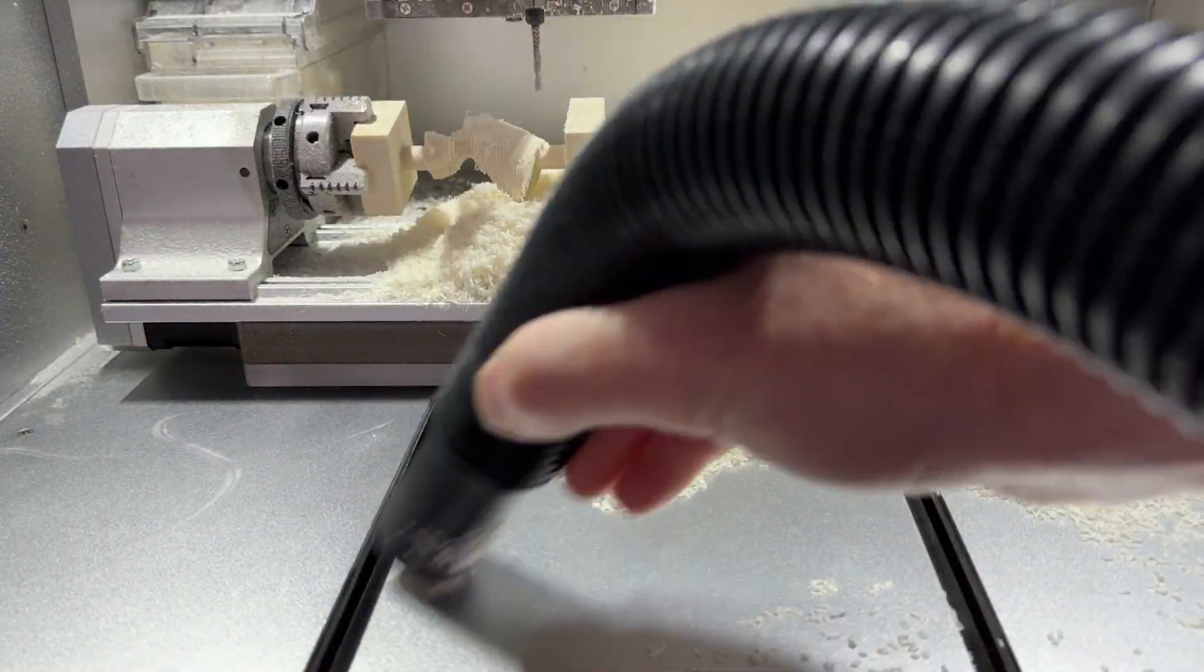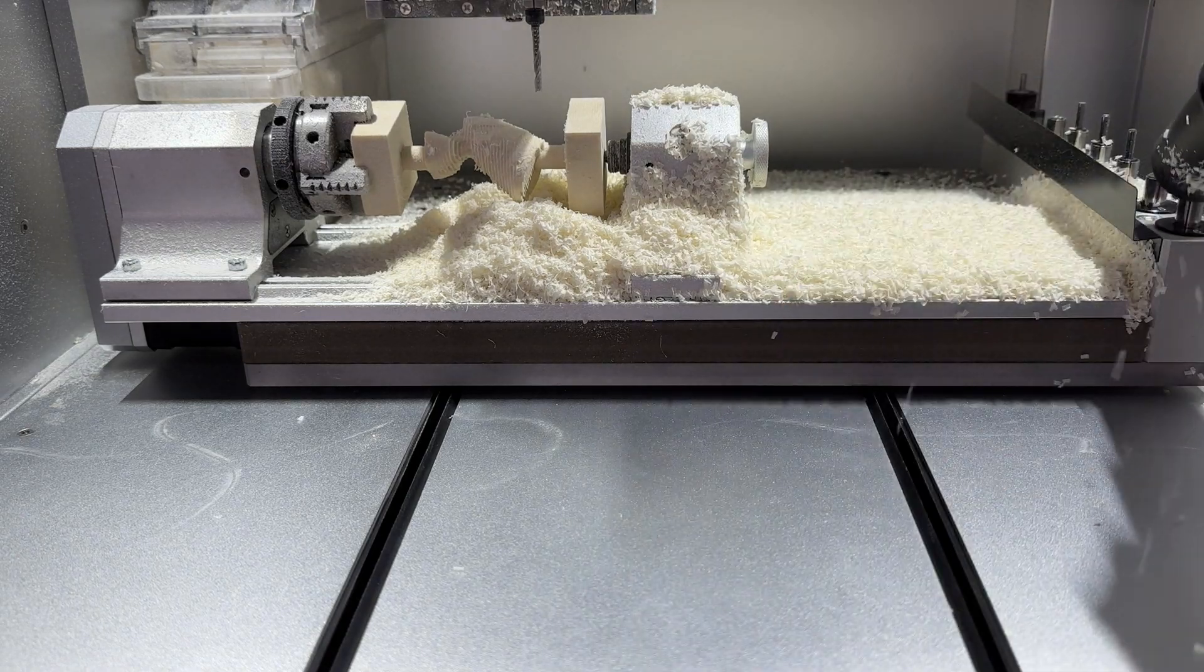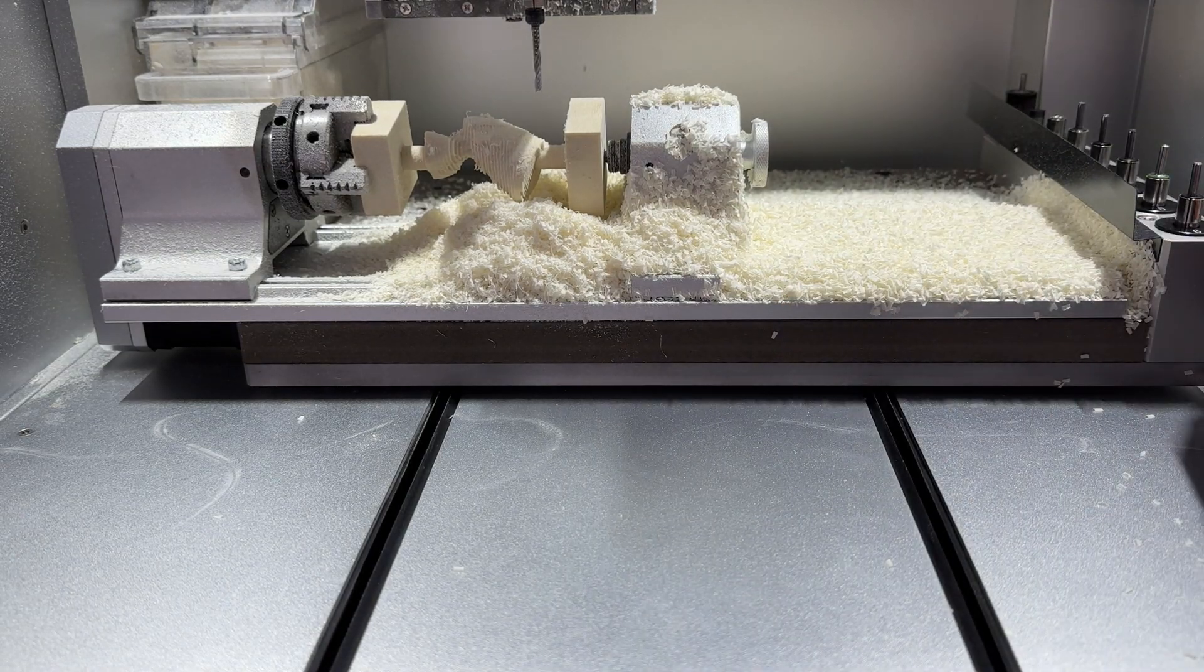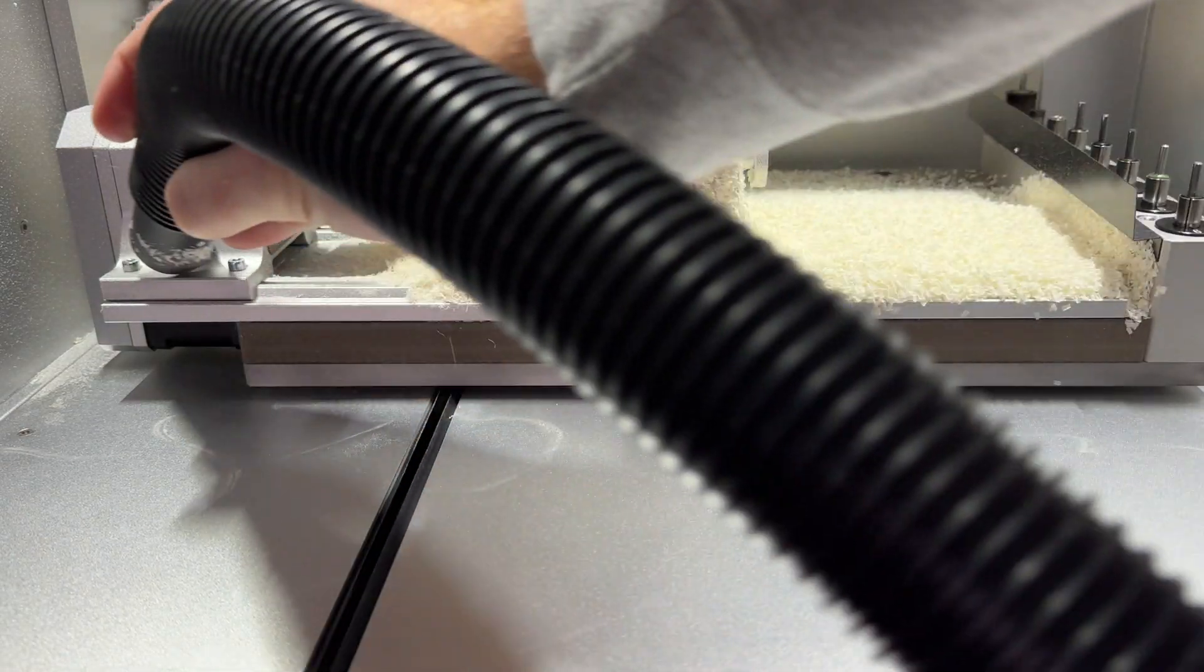Once completed, we can carefully use a vacuum to clear away some of the dust and chips before moving on to the next file. Be careful not to bump or move the part fixed in our rotary module.